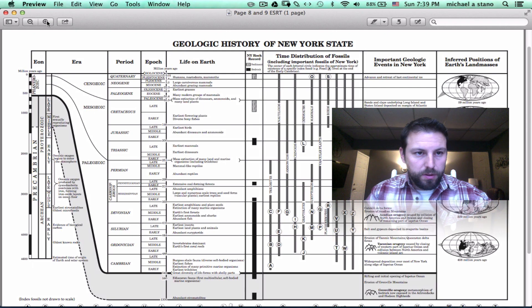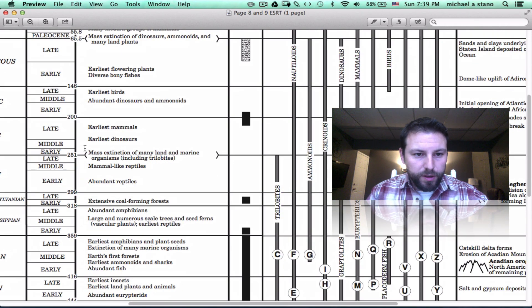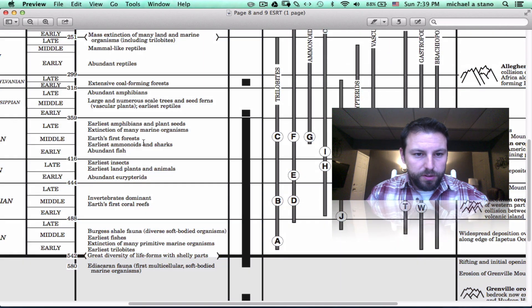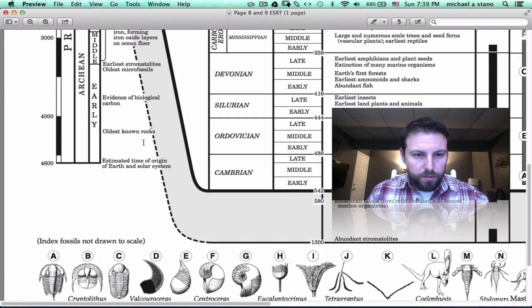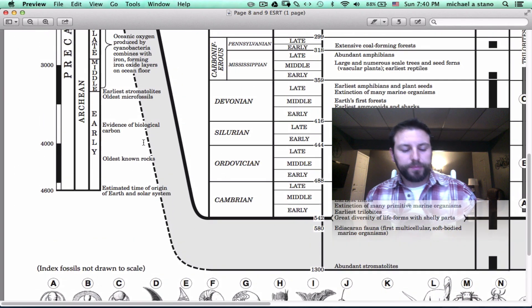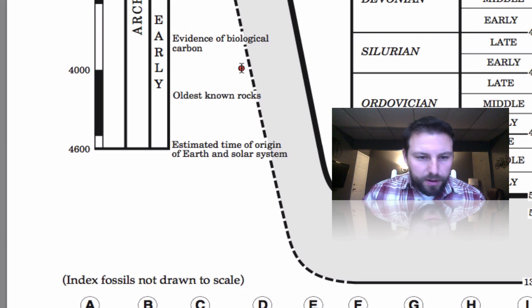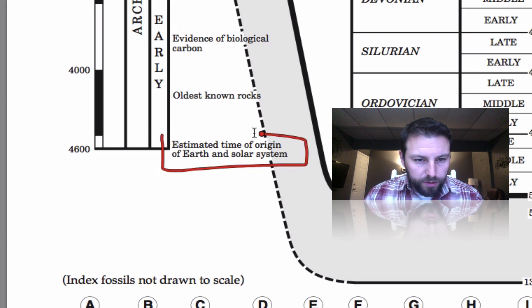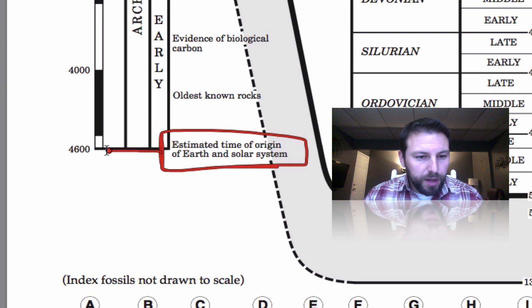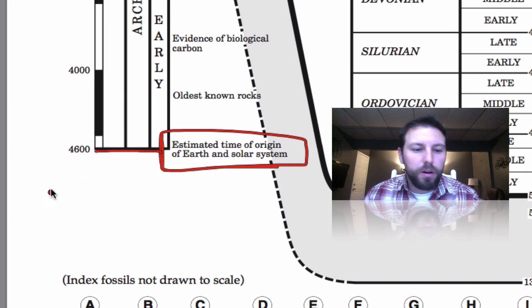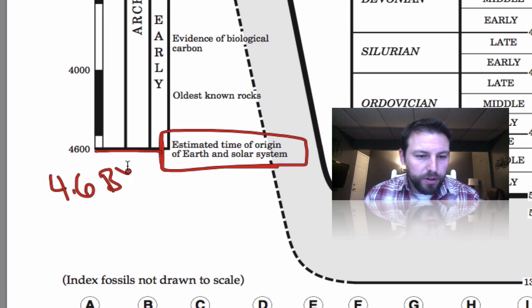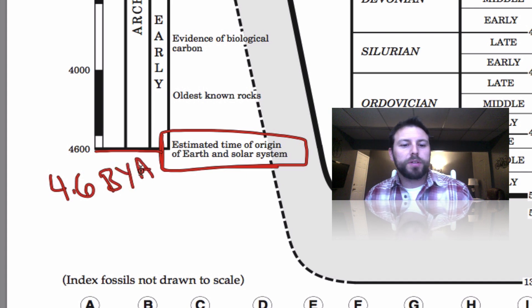Let's zoom in on this area right here. You can see that it says 'Estimated Time of Origin of Earth and Solar System' right here, and that corresponds with 4,600 million years ago, or 4.6 billion years ago — so a very long time ago.